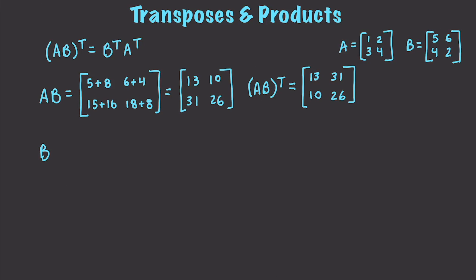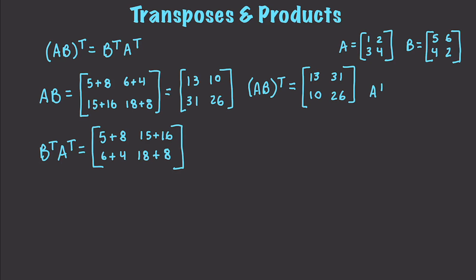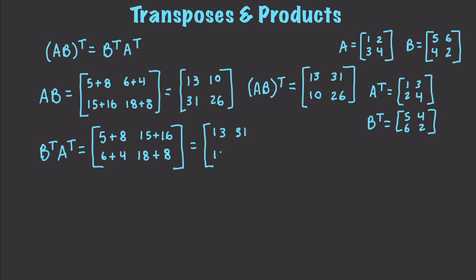So now I want to get the transpose of B times the transpose of A. The transpose of A is 1, 2, 3, and 4, and the transpose of B is 5, 6, 4, and 2 — that's where those came from. If I go and do that, I get 5 plus 8, 15 plus 16, 6 plus 4, and 18 plus 8. And if I add those up, I get 13, 31, 10, and 26, which is exactly the same as the transpose of the product. Good stuff.